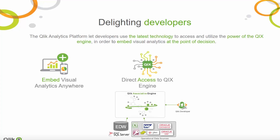The Qlik Indexing engine, or Qix, is the world's most powerful associative data indexing engine. It can ingest data from any source and provides rapid access to all of it, performing calculations and aggregations on the fly. The Qix engine ensures that analytics are fully interactive and stay in context together.